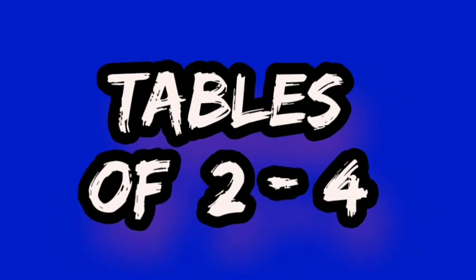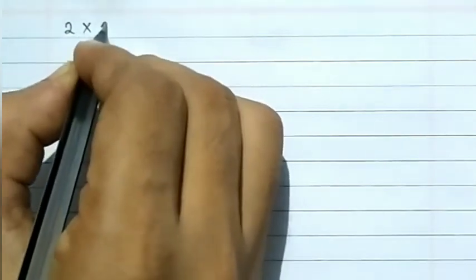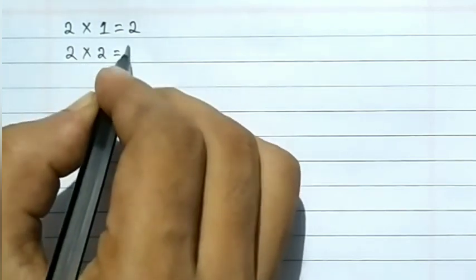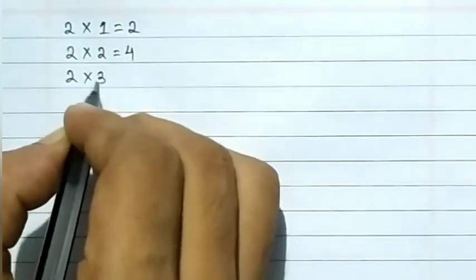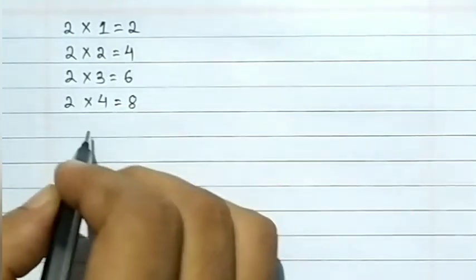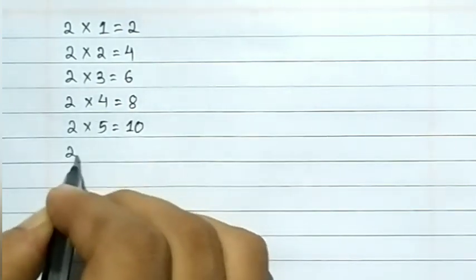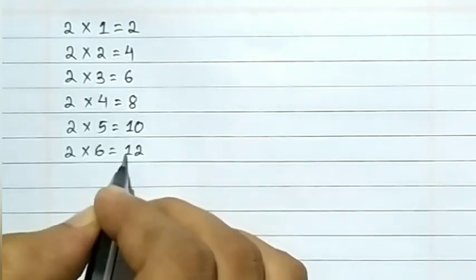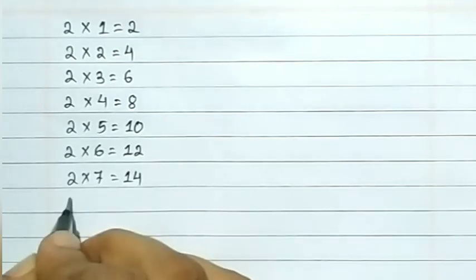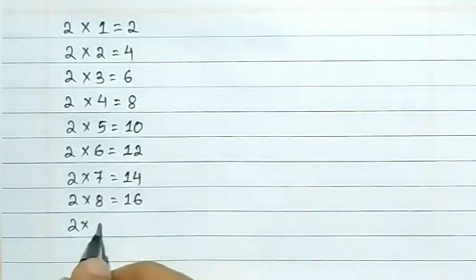Learn tables of 2 to 4. 2 1s are 2, 2 2s are 4, 2 3s are 6, 2 4s are 8, 2 5s are 10, 2 6s are 12, 2 7s are 14, 2 8s are 16, 2 9s are 18.